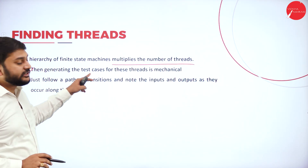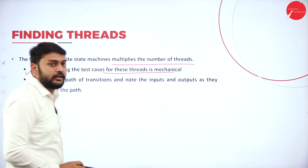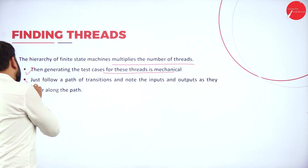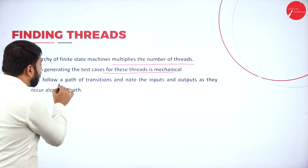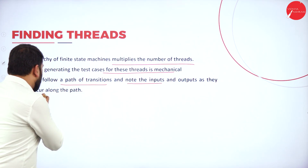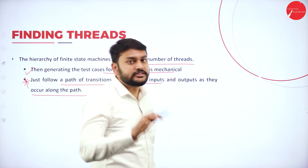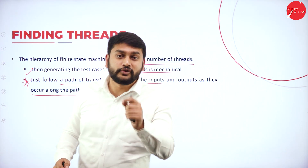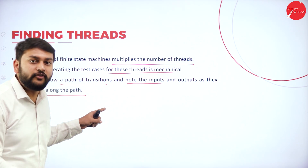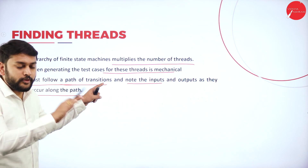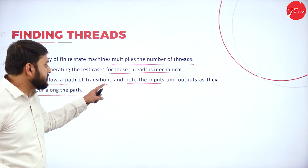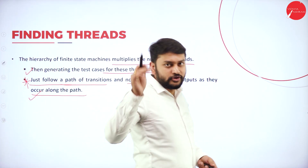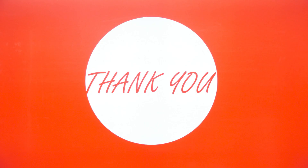Generating test cases for these threats is mechanical. Just follow the path of transitions and note the inputs and outputs as they occur along the path. This path will help you find the threat. Follow the path of transition from one state to another, note the input and output as they occur, and that will give you the threat.